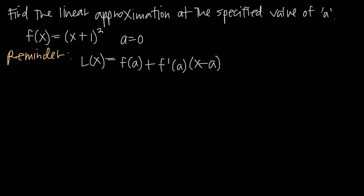In this video, we're talking about how to find a linear approximation of a function at a particular point. A linear approximation of a function is exactly what it sounds like — it's an approximation of the function that's a line. So if we wanted to find the equation of a line that most closely approximated this function at the point a equals 0, we would use this formula here to do so.